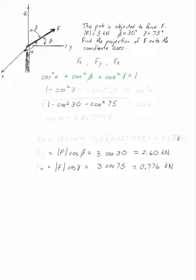I'm given beta, which is 30, and gamma, which is 75. This will give me cosine squared alpha. If I take the square root of that, I get cosine alpha, which is equal to 0.4277998 or something like that.